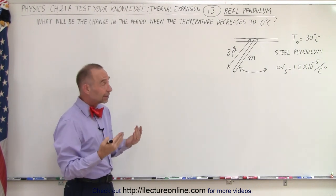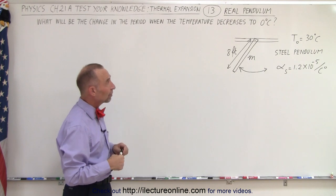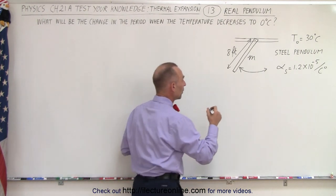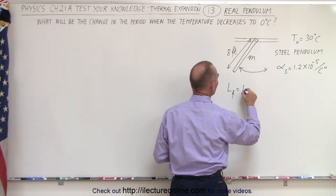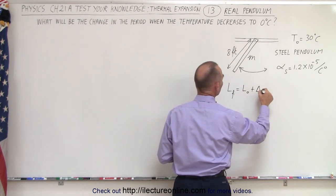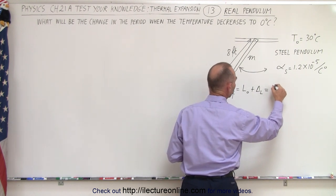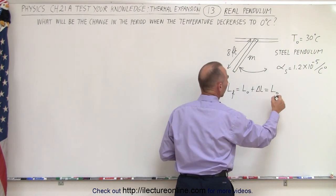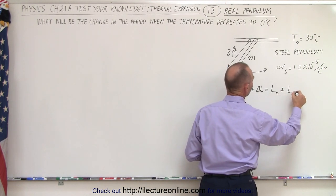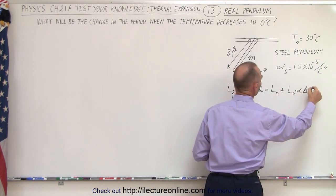Let's first calculate how much the length will change with a temperature change of 30 degrees. The final length will be equal to the original length plus the change in length, which means the original length plus L-initial times the coefficient times the change in temperature.